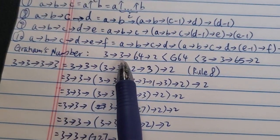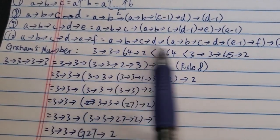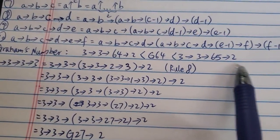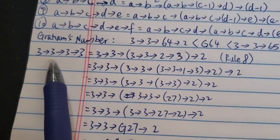So for Graham's number, we know that it cannot be represented precisely. However, it's somewhere between, so G64 is somewhere between 3→3→64→2 and 3→3→65→2.